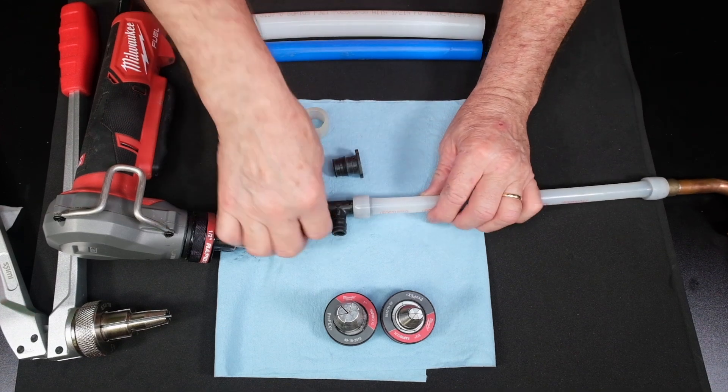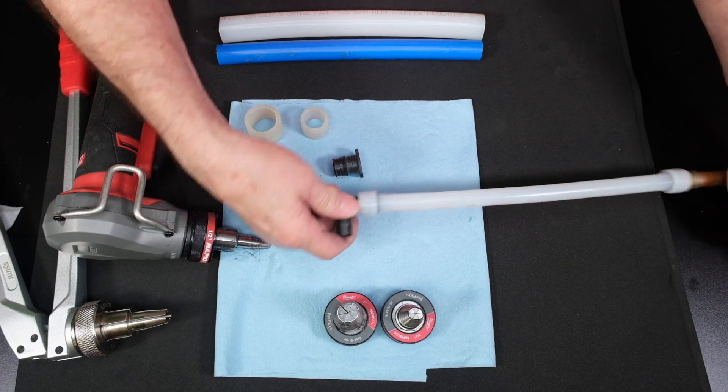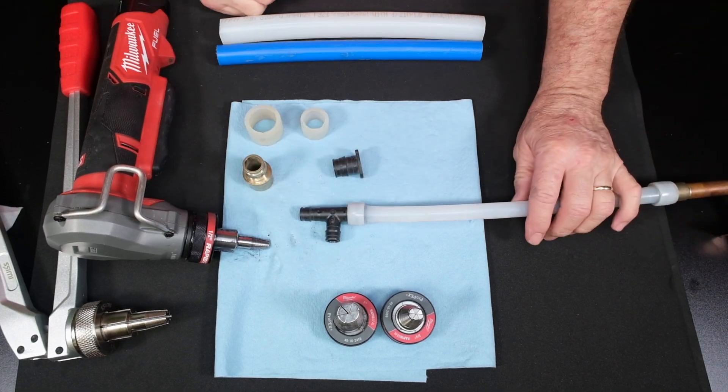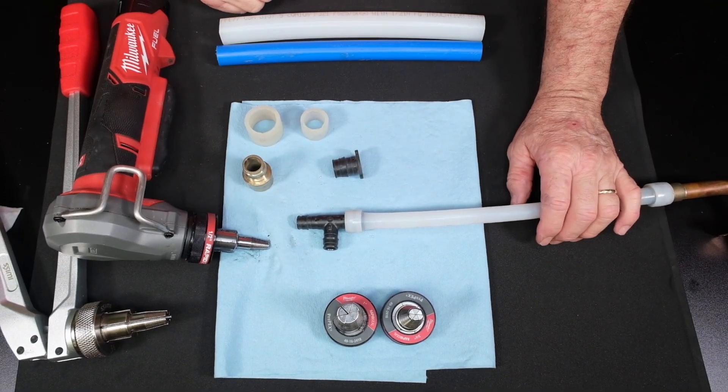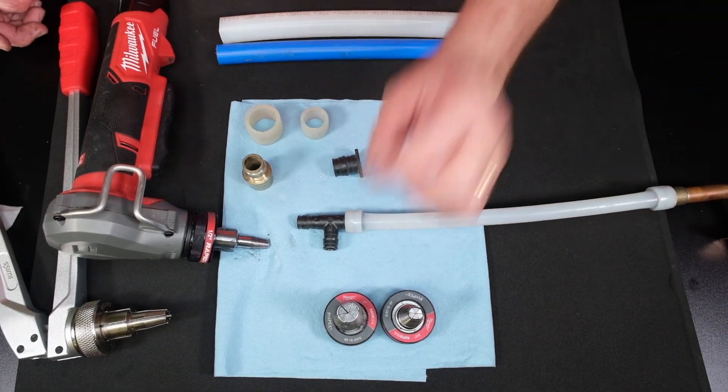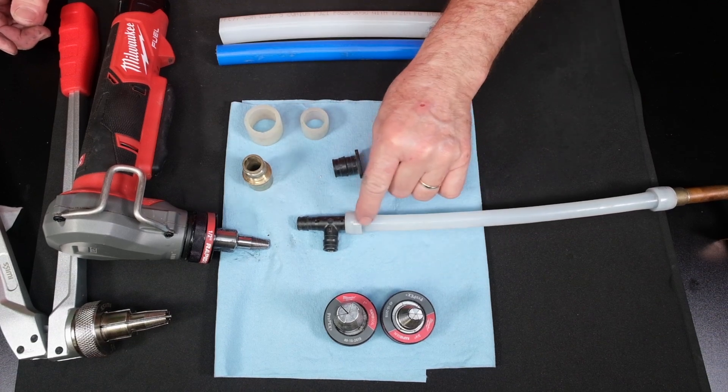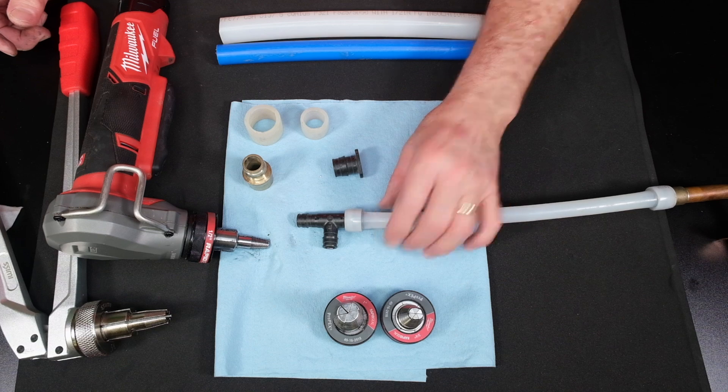The other wonderful thing about this piping is freezing. This pipe can actually freeze ten times the freeze-thaw cycle of copper. Soft copper and copper pipe will freeze, and it will burst and split. PEX can freeze, and it expands, as you saw we expanded it here, and then it will shrink back down.